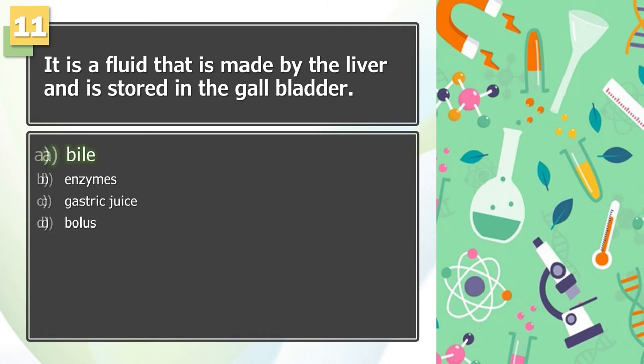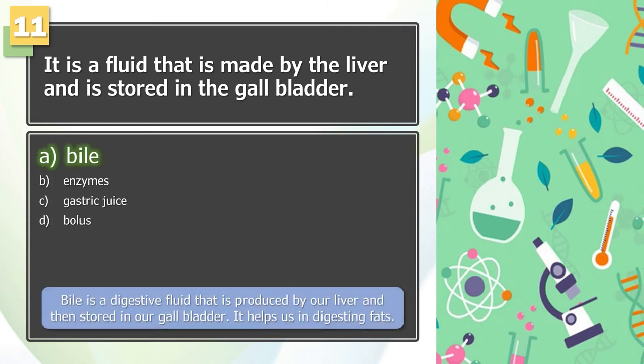The answer is A. Bile is a digestive fluid that is produced by our liver and then stored in our gallbladder. It helps us in digesting fats.